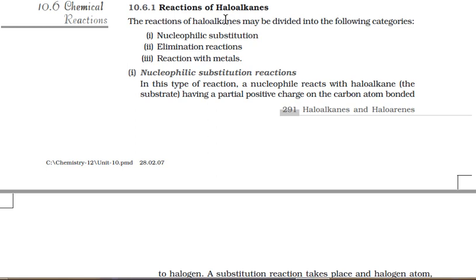We will divide our reactions into two parts: reactions of haloalkanes and reactions of haloarenes. Reactions of haloalkanes can be divided into three categories: nucleophilic substitution reactions, elimination reactions, and reaction with metals. For haloarenes, there is a fourth category — electrophilic substitution reactions. Both can also show reduction reactions, where haloalkanes are reduced to alkanes and haloarenes are reduced to aromatic compounds.